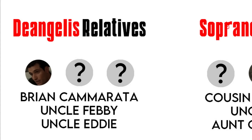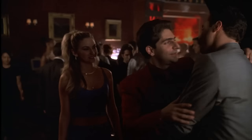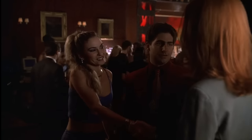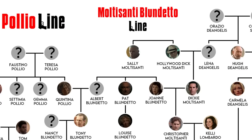Tony brings up Uncle Eddie during their fight in the episode Whitecaps. The only thing we know about him is that he was involved with the mob in some way. On the Moltisanti line, we have Christopher's cousin Gregory. He lives in LA and is engaged to Amy Saffir in the episode D-Girl. It's unclear who he's related to, so presumably either Hollywood Dick had more siblings, or the connection goes back even further.